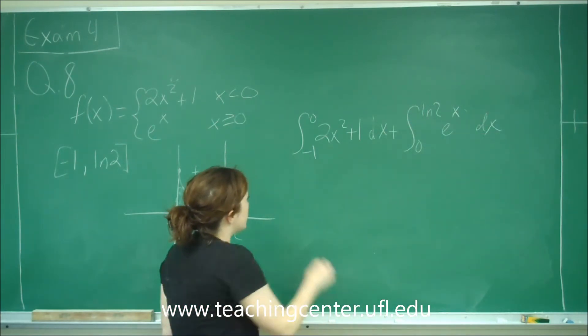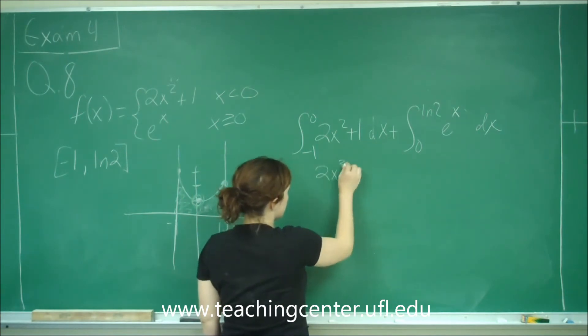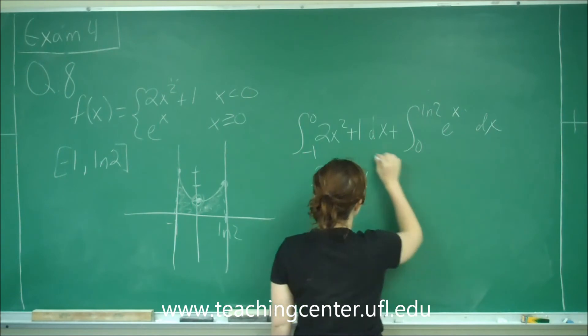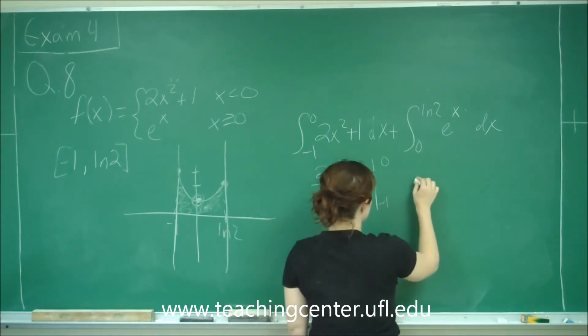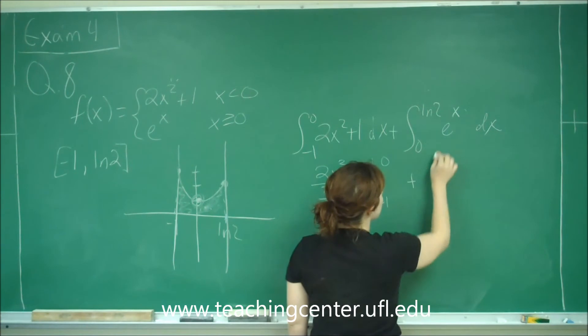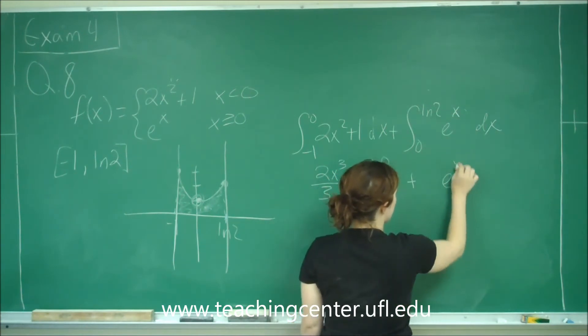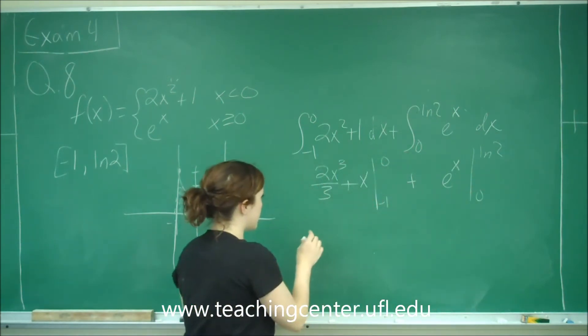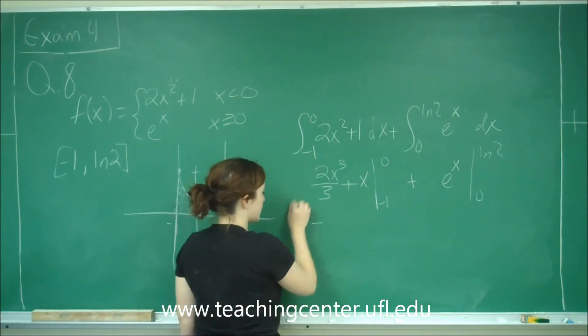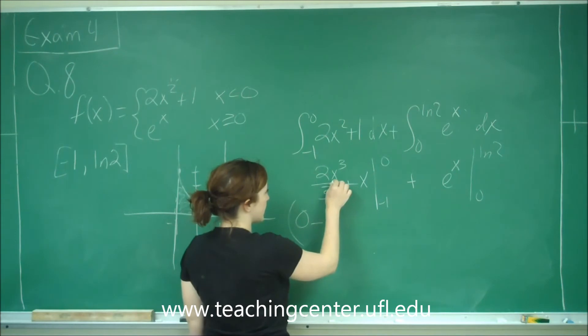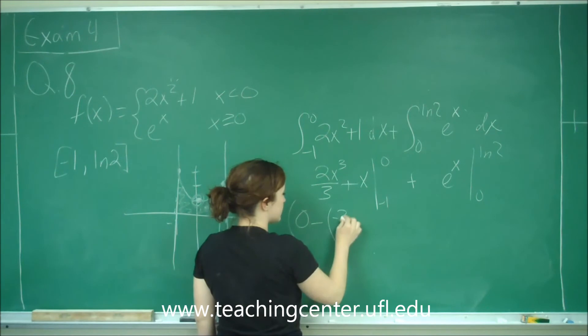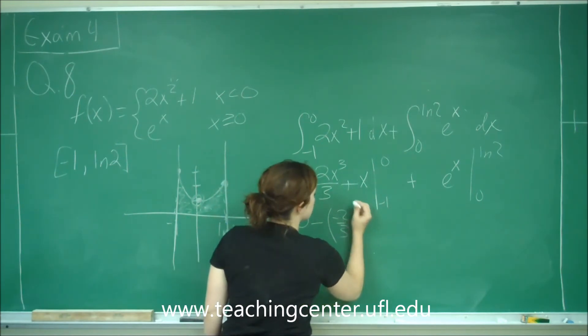When I take the integral of this, I get 2x cubed over 3 plus x, evaluated from negative 1 to 0, plus the integral of e to the x which is e to the x evaluated from 0 to ln of 2. When I plug in 0, I get 0 minus, if I plug in negative 1, I get negative 1 cubed is negative 1 times 2 thirds is negative 2 thirds plus negative 1, which is really just minus 1.